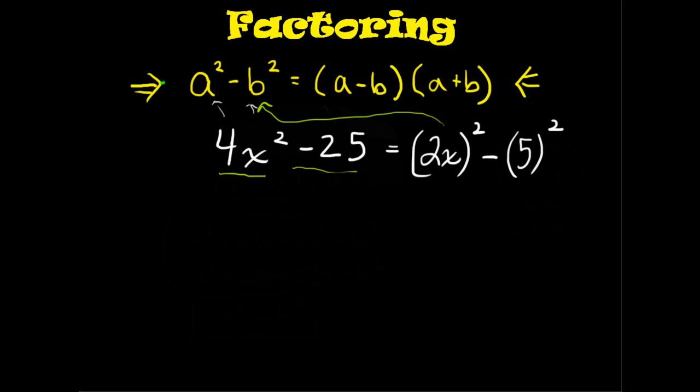So now how can we use this identity for the difference of two squares to finish factoring out this problem? Well, here it says this is equal to a minus b times a plus b. Well, what are a and b? Instead of having them written as a's and b's, let's write them as 2x and 5.